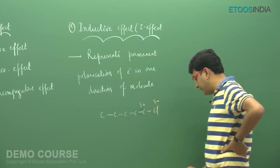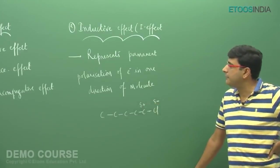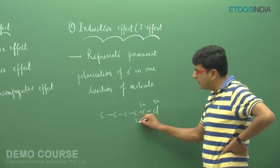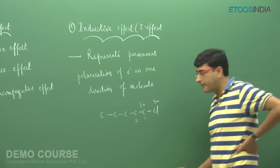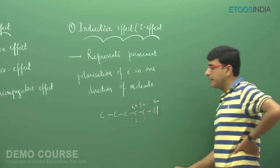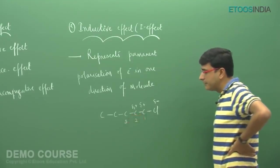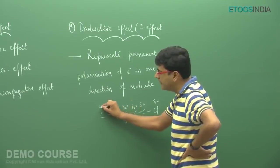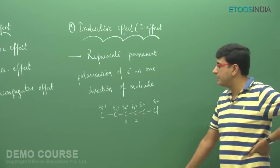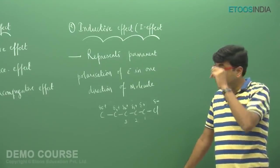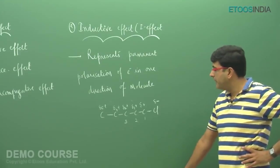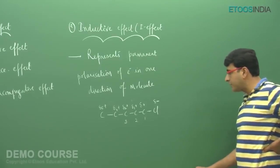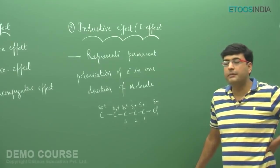Due to electron deficiency, the first carbon atom will pull electrons from the second carbon atom, imparting a partial positive charge on the second carbon. The second carbon atom then pulls sigma-bonded electrons from the third carbon, imparting a charge there too. This continues along the carbon chain — a shifting of sigma-bonded electrons from one end to the other. This effect occurs because of the greater electronegativity of chlorine; if it were a carbon atom, there would be no difference in electronegativity and no such polarization would occur.